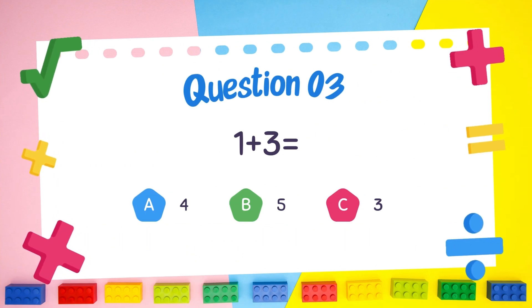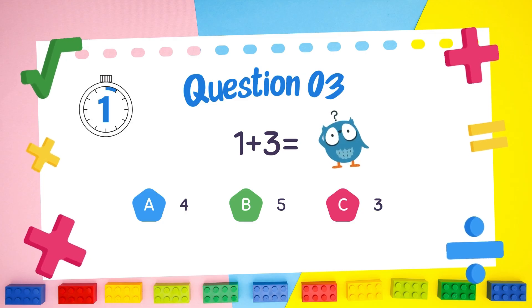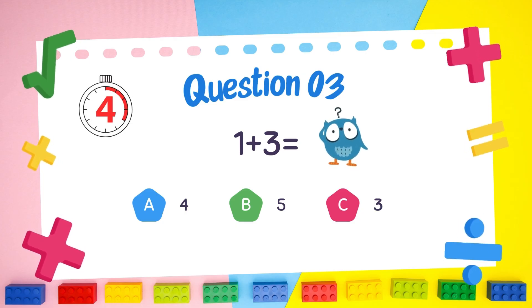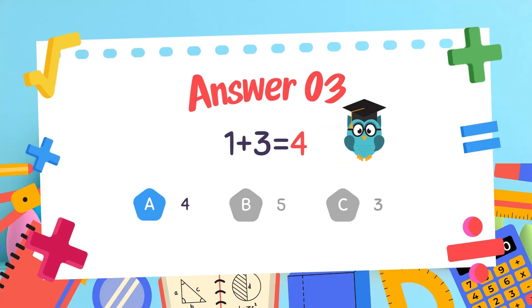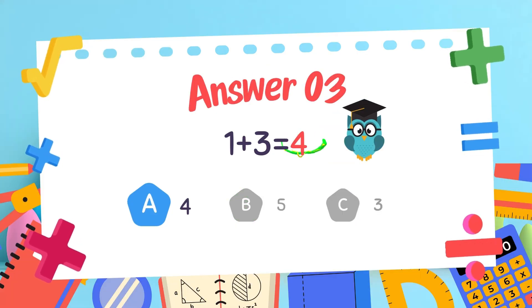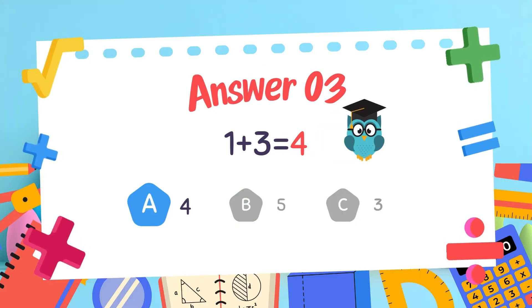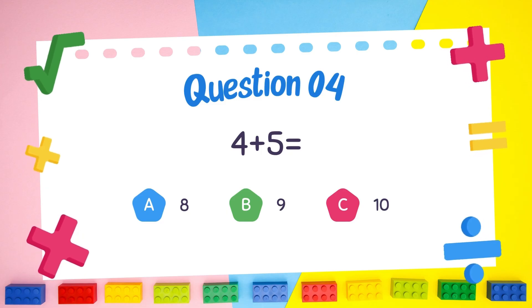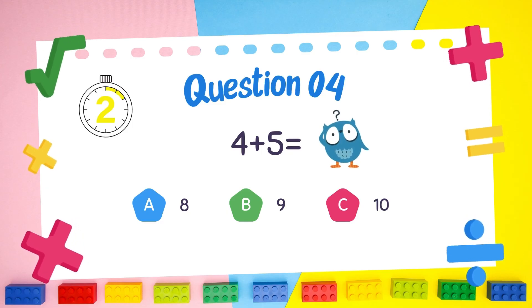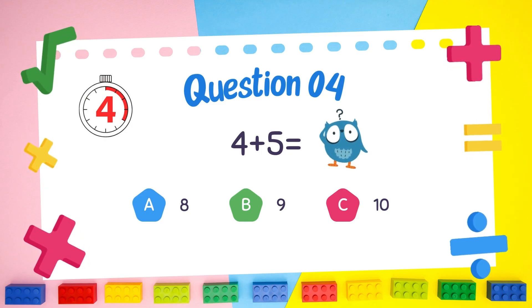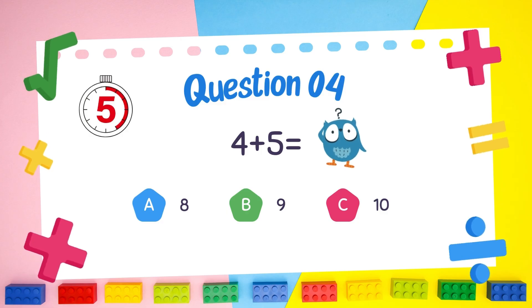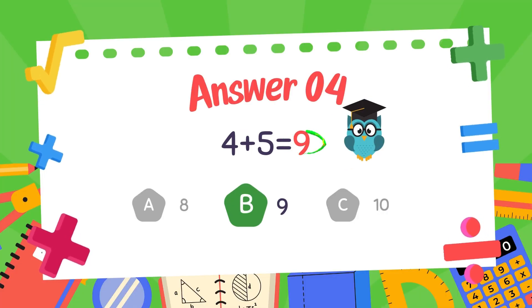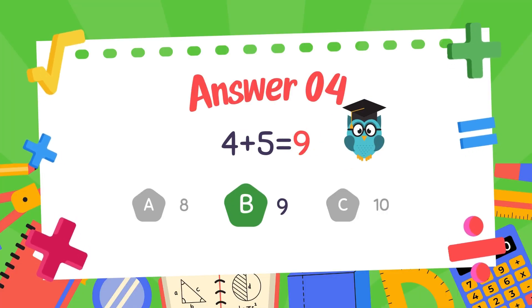What is 1 plus 3? The answer is 4. What is 4 plus 5? The answer is 9.